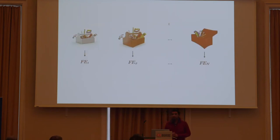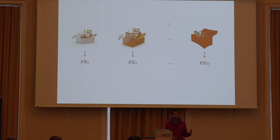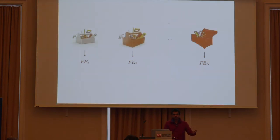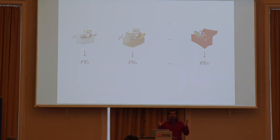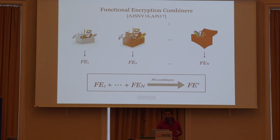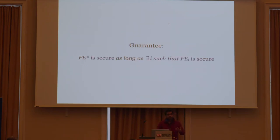So what are function encryption combiners? We have these different constructions of FE from different assumptions, and suppose you want to use a secure FE construction — which of these assumptions do you believe? An FE combiner allows you to combine these different FE instantiations — these different FE candidates — into one secure FE candidate, with the guarantee that the resulting combined FE candidate is secure as long as any one of the original FE candidates was secure.